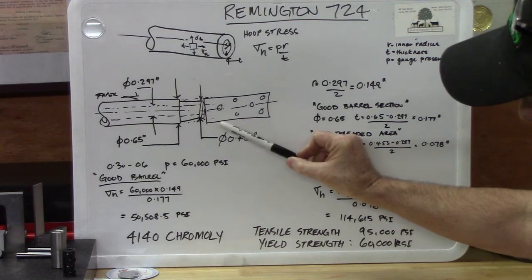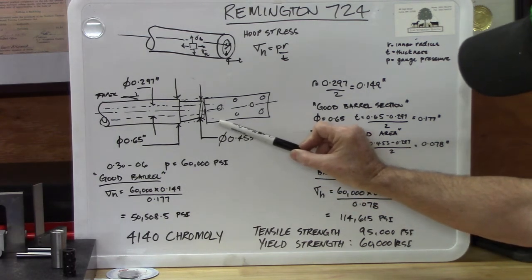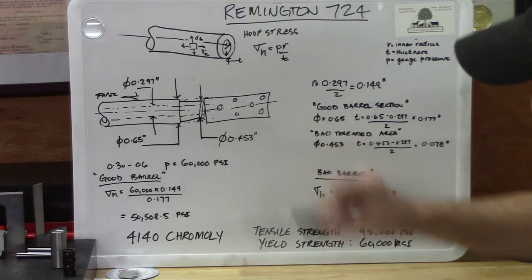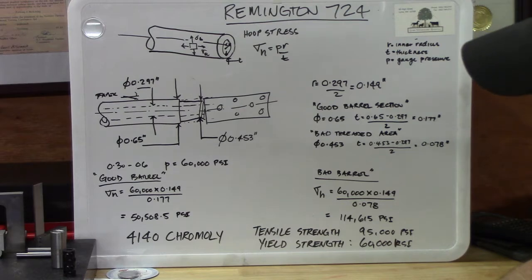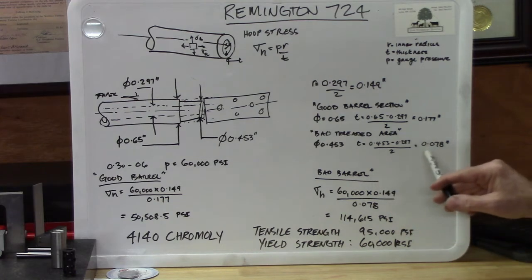Then the bad section, because of the way I had to get this off, we had to turn down and because it was eccentric to everything, it actually thinned down the wall in this area. I measured it with a vernier, I wasn't going to try and be down to the nanometer here. And I came up with an outside diameter of 0.453. So the wall thickness in the bad barrel section, for want of a better word, is 0.078 inches.